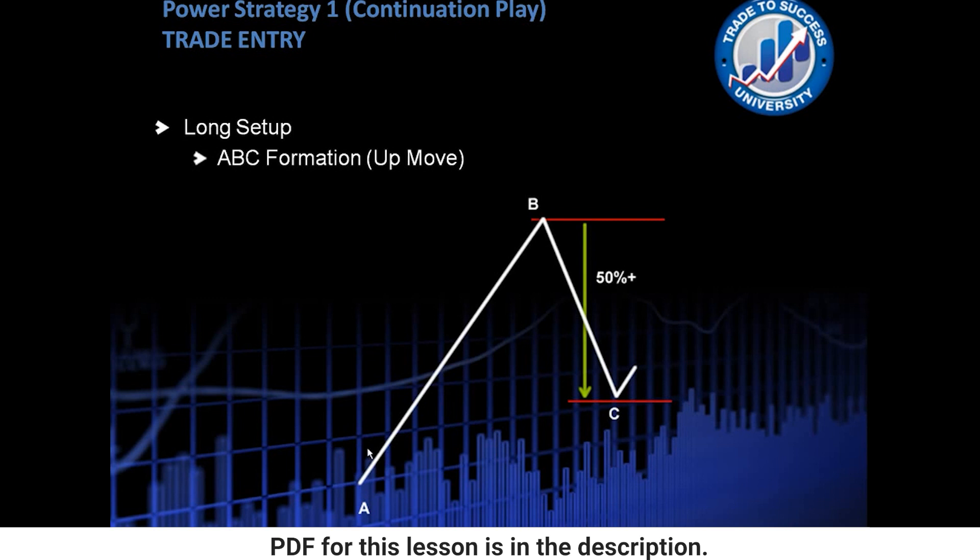So we count the amount of points from A going up all the way to B. And we want 50% of that to be hit from B to C at least. So let's say the move from A to B was 100 pips. So the price at A to the price at B was a difference of 100 pips.